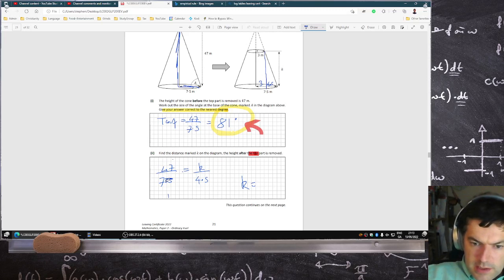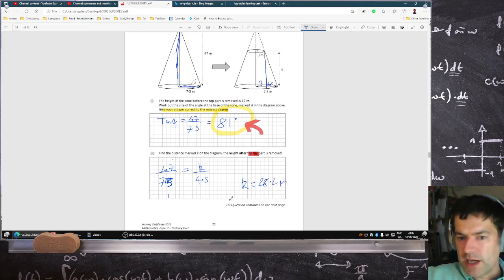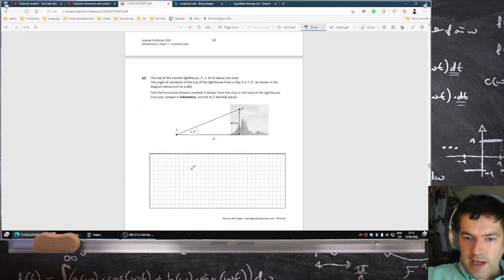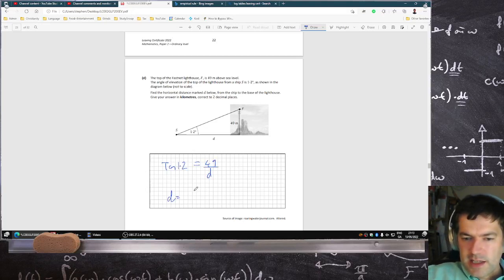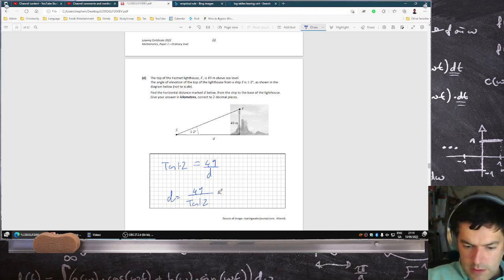That's 7.5. 28.2, yeah, same answer. I think that's the way they probably imagined students would do it then. Because this one here now, you can say tan 1.2 is 49 over D. That means D is 49 over tan 1.2 to two decimal places. 2,339.24. But they weren't in kilometers, so that'd be 2.34 kilometers.